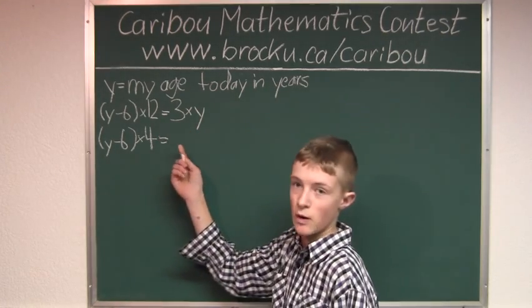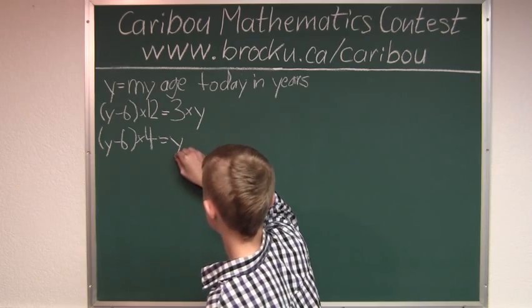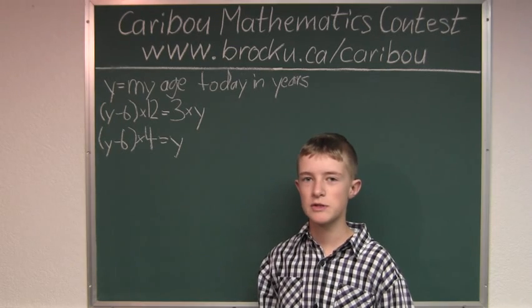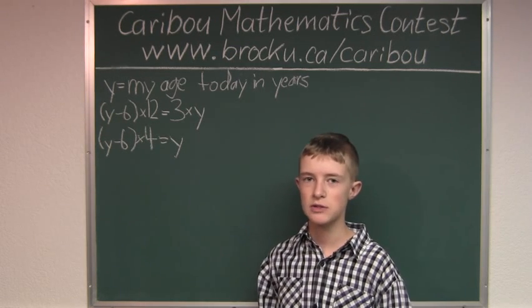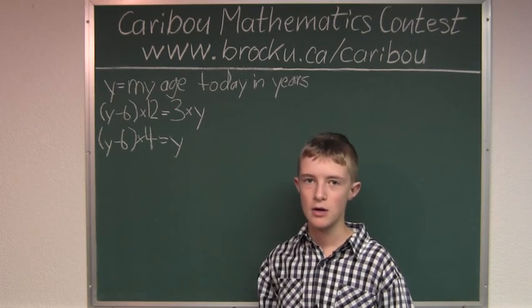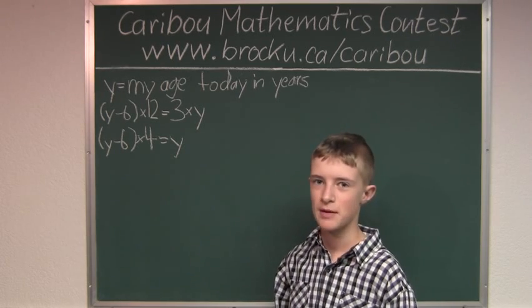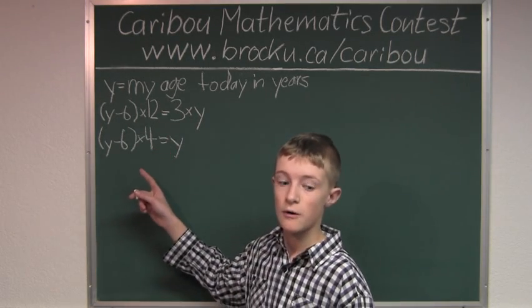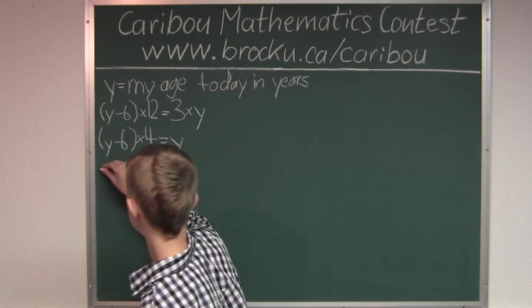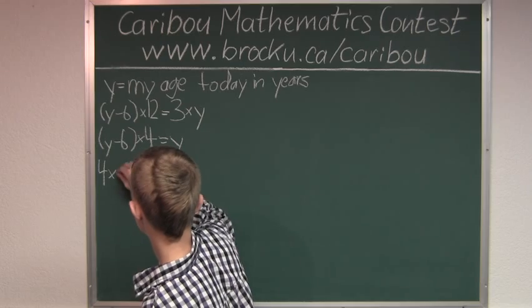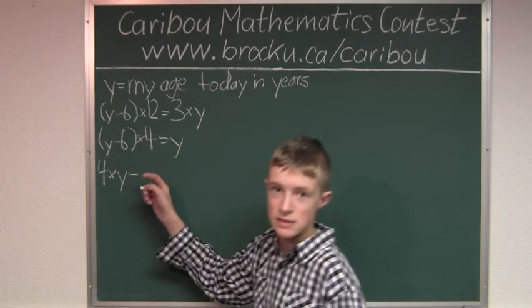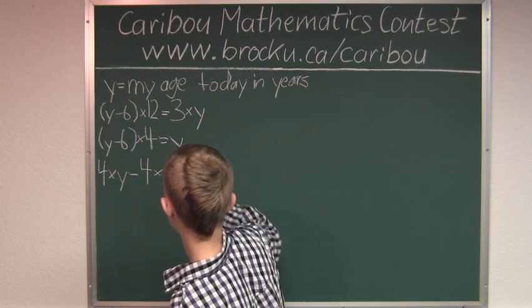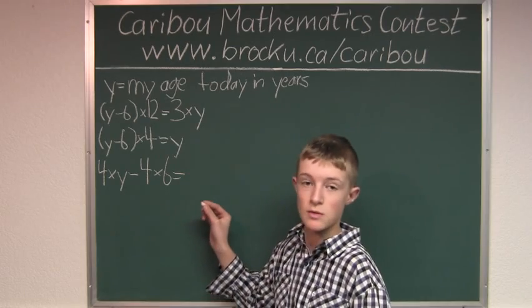So, if you want to multiply a bracket with a factor, you have to multiply the factor with each term in the bracket, which is also known as the distributive law. So, the factor would be 4, so we would have to do 4 times Y minus 4 times 6 equals Y.